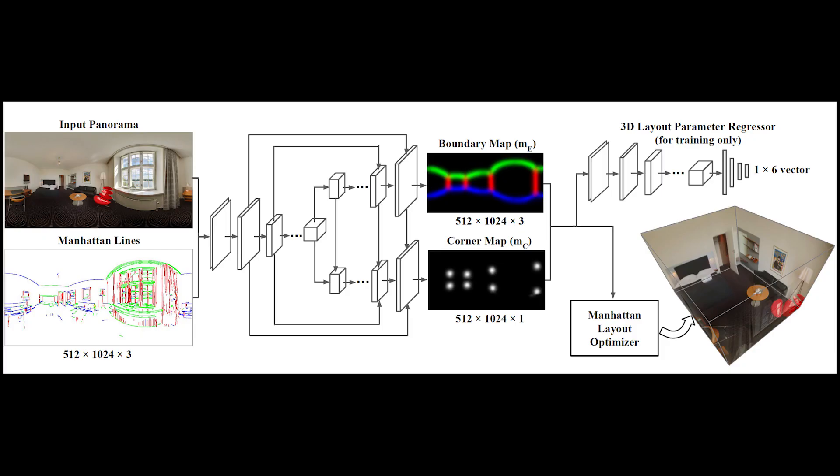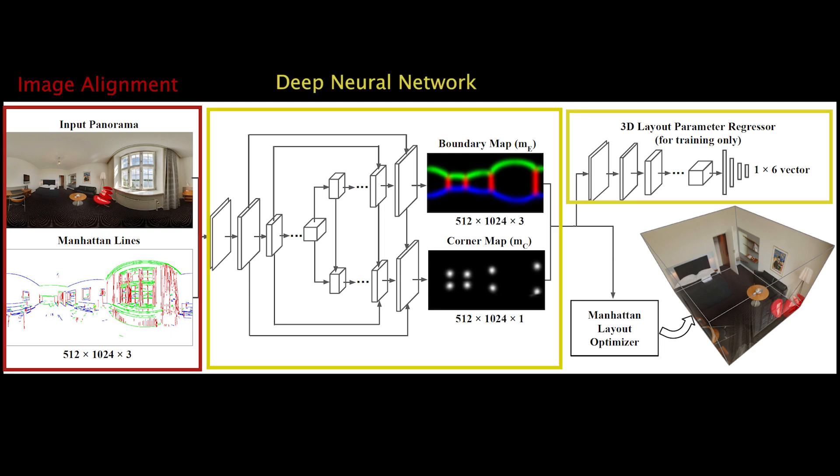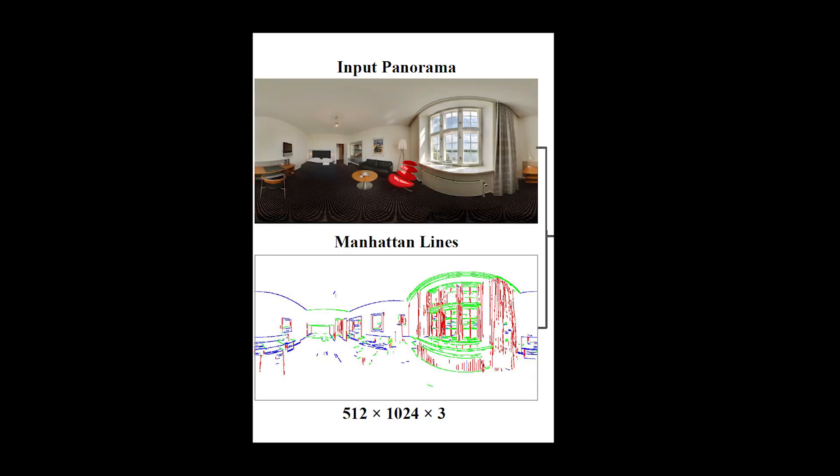Now that we have compared LayoutNet with the existing methods, let's explore how the algorithm works in detail. The training pipeline can be split up into three modules: image alignment, deep neural network, and Manhattan layout optimizer. The alignment step can be viewed as a data pre-processing procedure which estimates and adjusts the floor plan direction. Apart from that, the input images are passed through a line segment detector to extract long line segments in it. The different colors in the figure indicate the different edge directions in the 3D space. Those with the same color means that they are parallel in 3D. These extra features will then be fed into the neural net along with the raw RGB image.